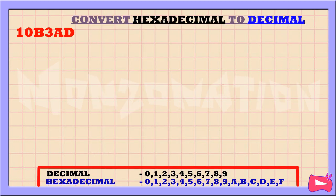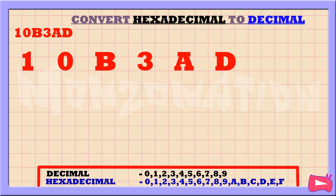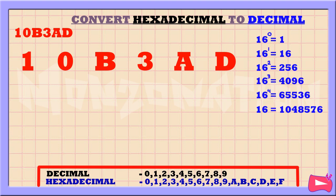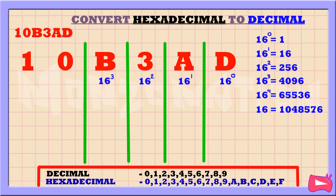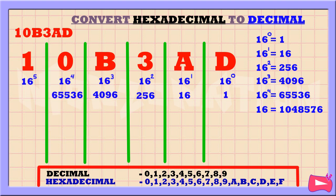Let's convert the hexadecimal number 10B3AD to decimal. The hexadecimal number system is based on the powers of 16. The first step is to write down the powers of 16 from right to left, then write down the final value of each power of 16.